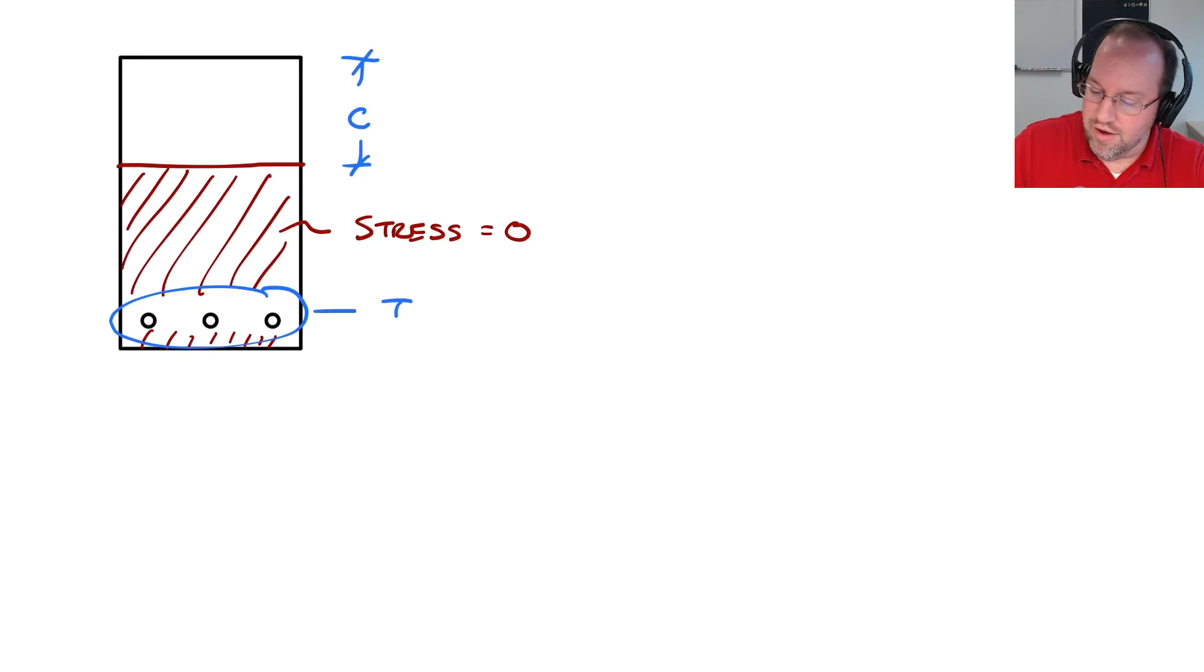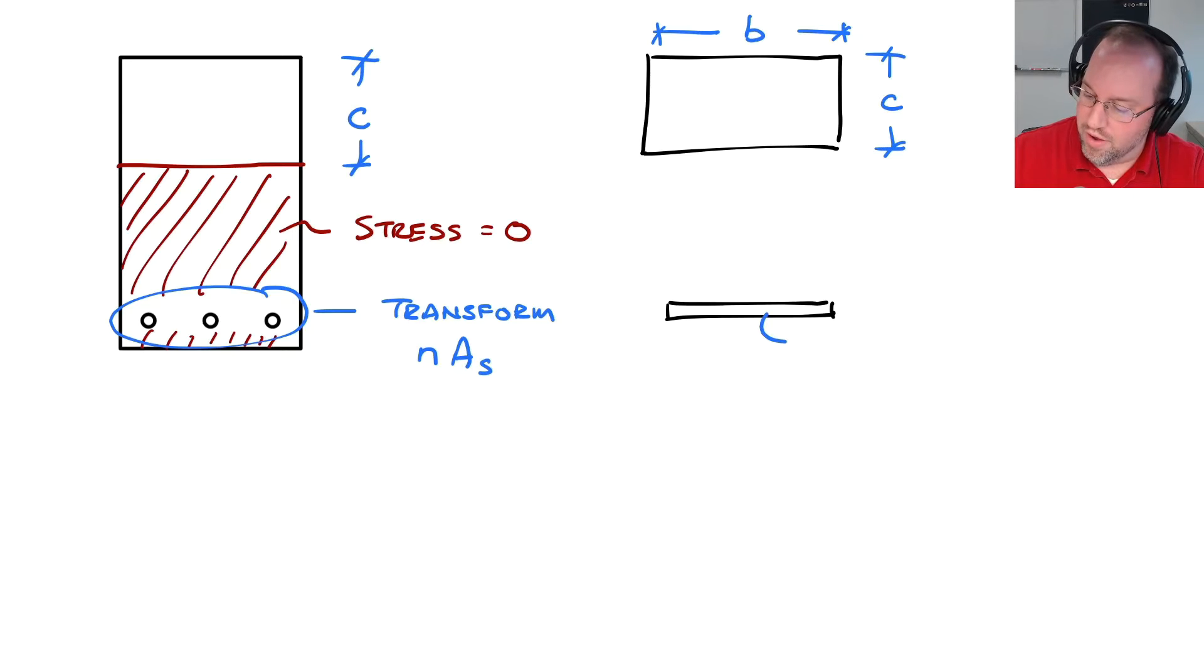However, I still do have the steel, so I need to consider that, and I need to transform it, which basically means to convert it to an equivalent area of concrete. So to transform that, I need to take N, that's the ratio of the steel modulus to the concrete modulus, multiplied by A sub S, which is the area of steel, to get some equivalent area. So what remains of my section? I have a rectangle up here on top, which is my concrete in compression. It has a width of B, and it has a depth C. And then I have a second section down here for my transformed steel area, and that has an area of N times AS. Now, the distance down to that section is D minus C, where D is the total depth from the top of my section all the way down to my steel, and I'm subtracting off distance C.